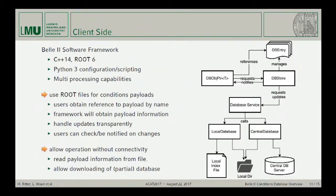On the client side, for each payload we will use ROOT files — the payloads, which are files, will be exactly in ROOT format. The users will obtain a reference to the payload by name, and then the framework will obtain the payload information, look at the local cache, and download if necessary. Updates are handled transparently so the user will always look at the correct data at the given time, but the user can also choose to be notified if there are any updates. We also implemented an operation mode without connectivity: instead of asking the data server, you just read payload info from a text file and don't need an HTTP connection at all, assuming you already have all payloads available. There is a tool to automatically download parts of the full database as needed — for example, if you want to work on a laptop on a flight, you just call the tool to download the current state of the database.